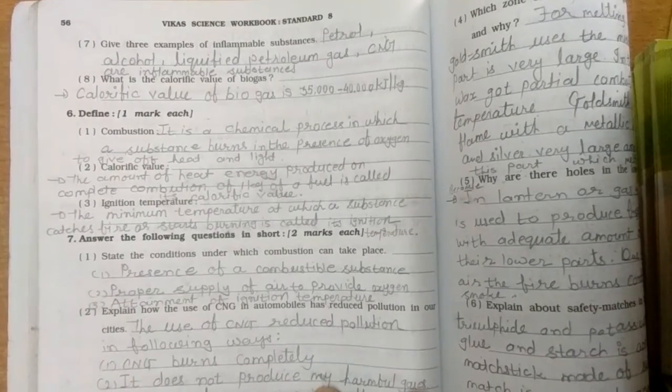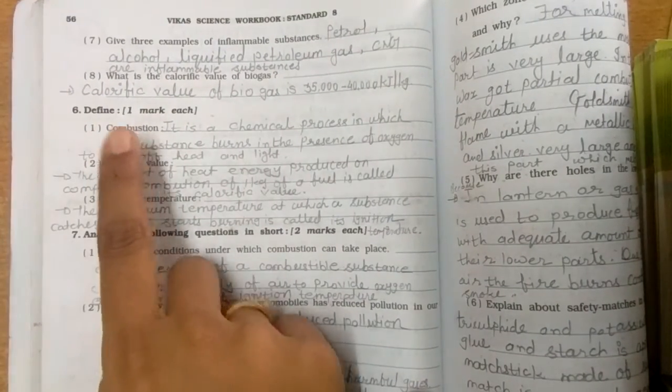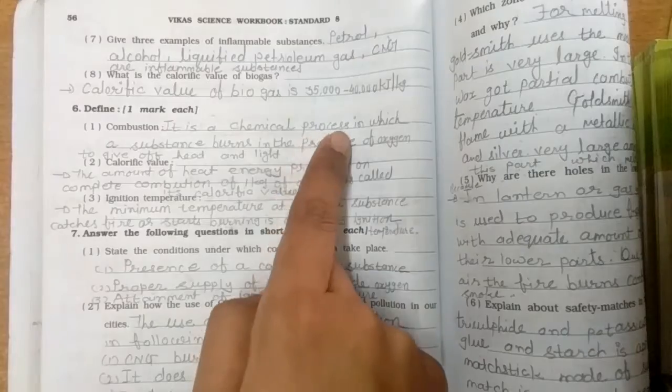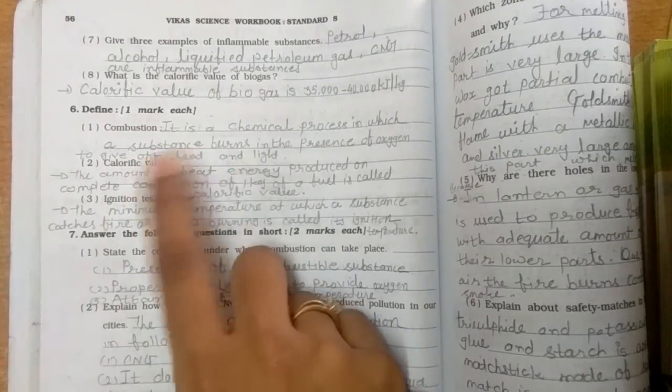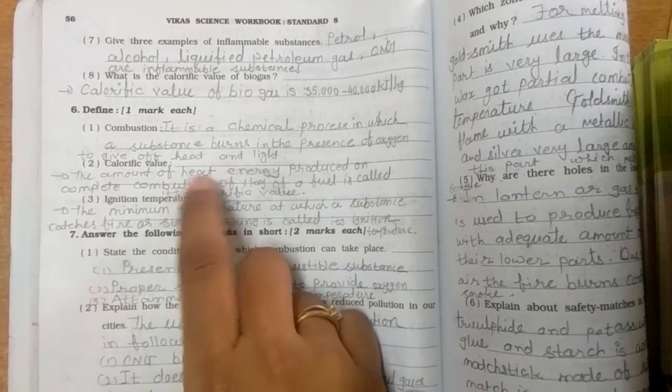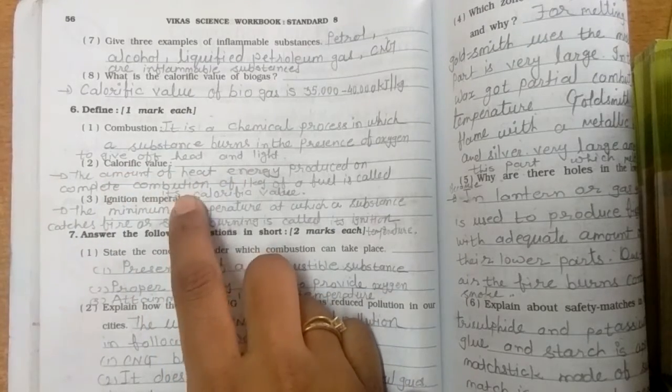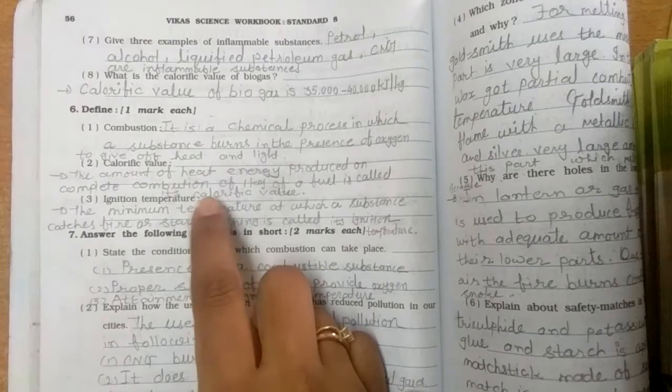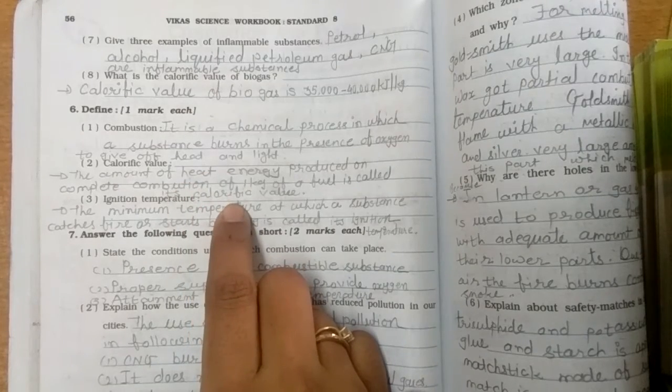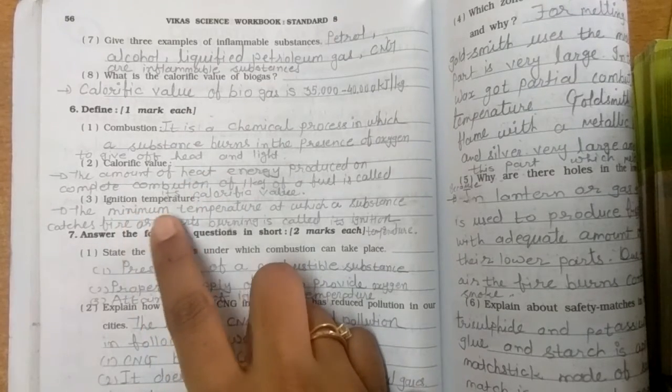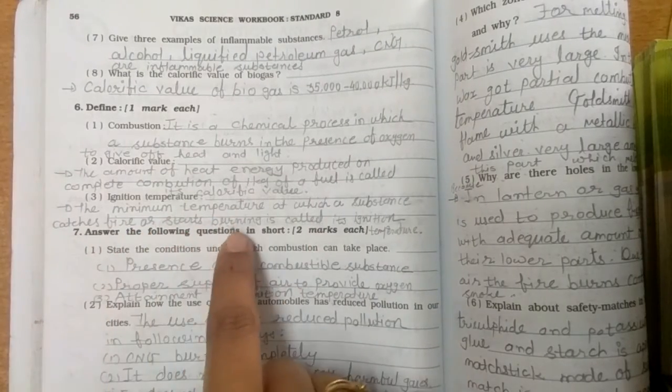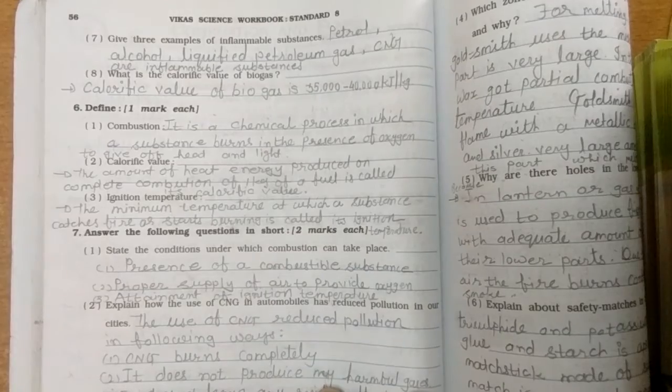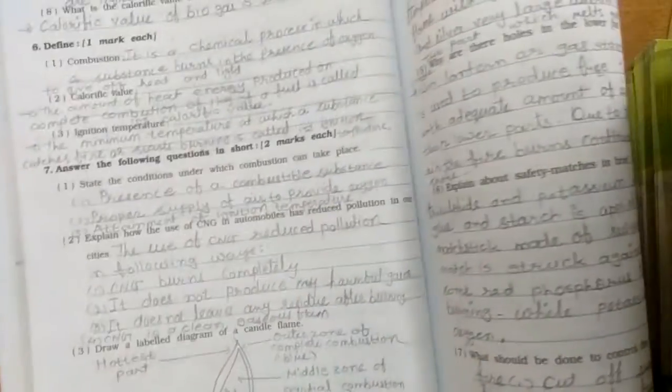Seven, give three examples of inflammable substances. Petrol, alcohol, liquefied petroleum gas, it means LPG, CNG are inflammable substances. Eight, what is the calorific value of biogas? The calorific value of biogas is 35,000 to 40,000 joules per kg. Question number six, define. First, combustion. Combustion is a chemical process in which a substance burns in the presence of oxygen to give both heat and light.